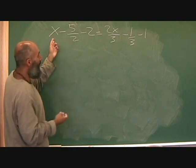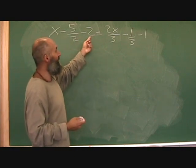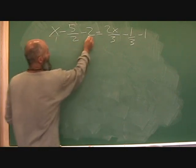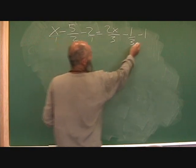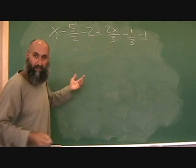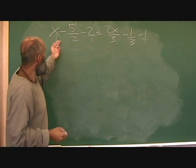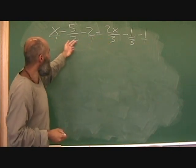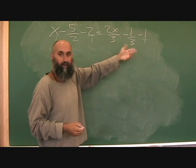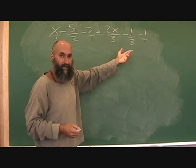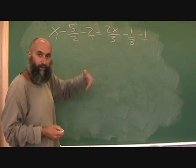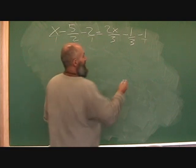For example, all of these terms - anything that's not a fraction is over one. So that's over one, that's over one, and that's over one. The common denominator between one, two, one, three, three, and one is just going to be six. So what you're going to do is multiply this whole equation by six.